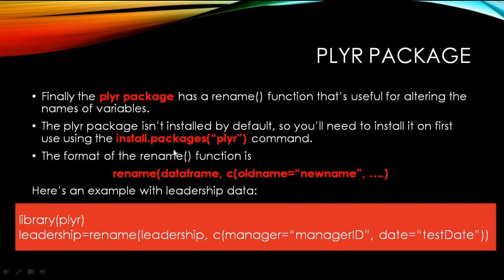The other one — the programming way — is also quite simple, in which you have to run the command names(). Inside the bracket, put the data frame name, and in the square bracket, the index number of the variable you wish to edit. In my case, 'date' has index 2, and I want to rename it as 'test date'. So this becomes the new name.